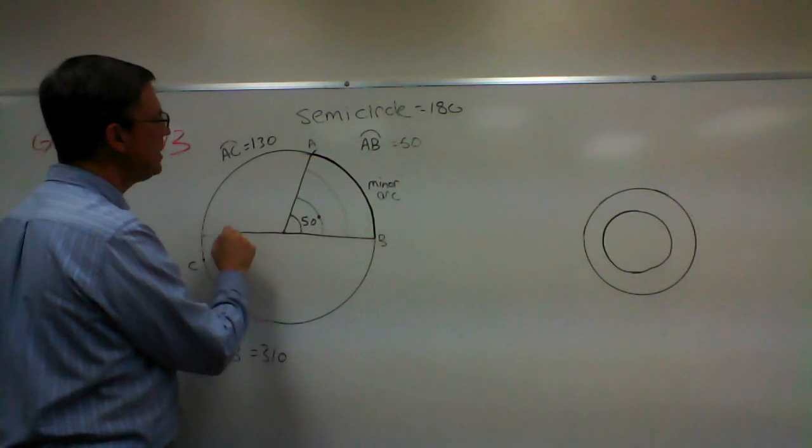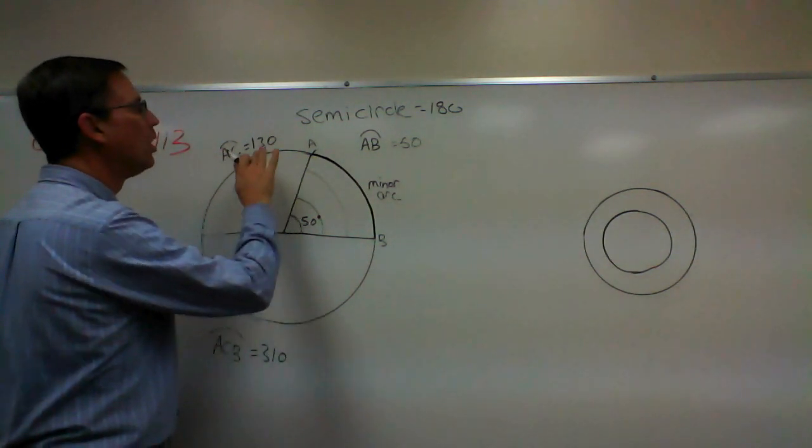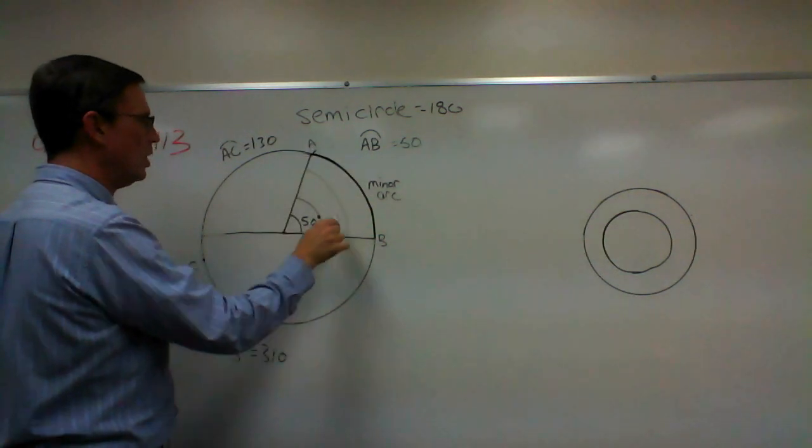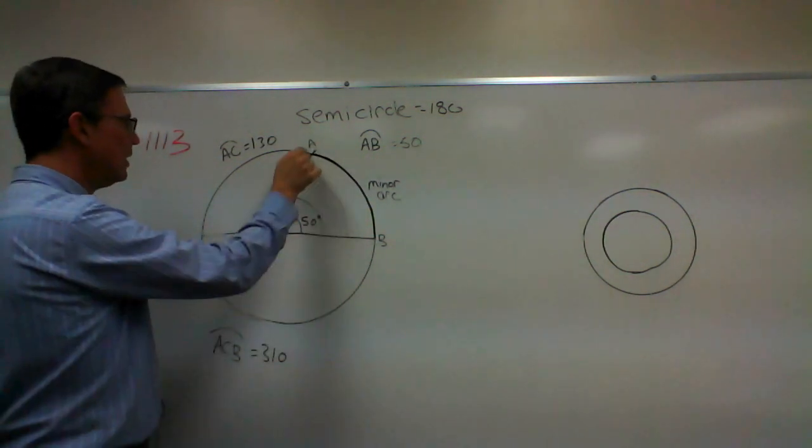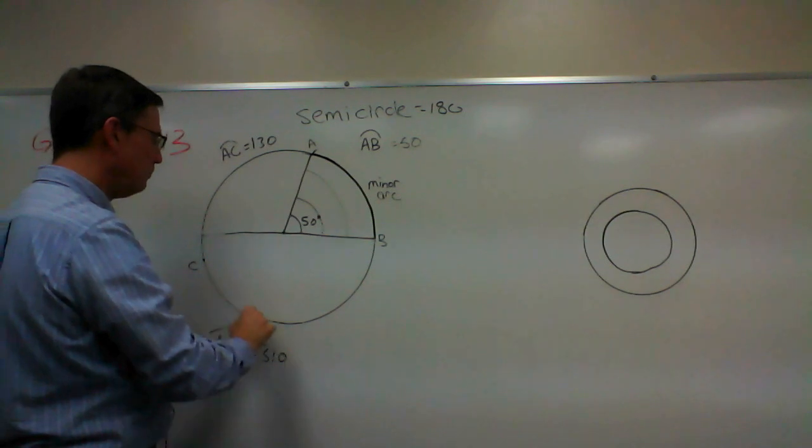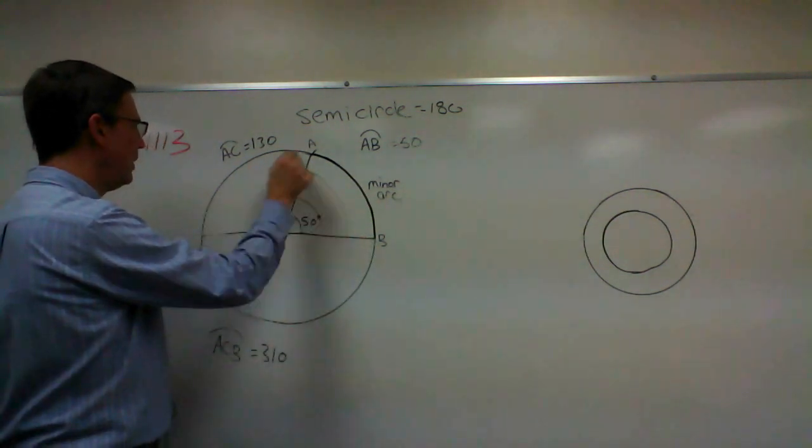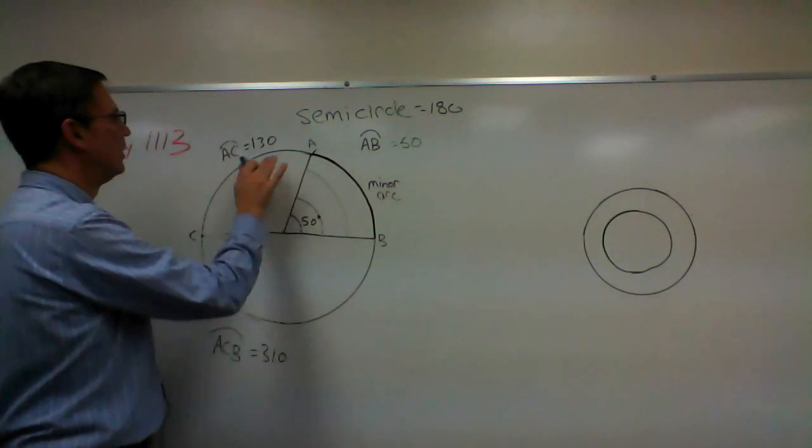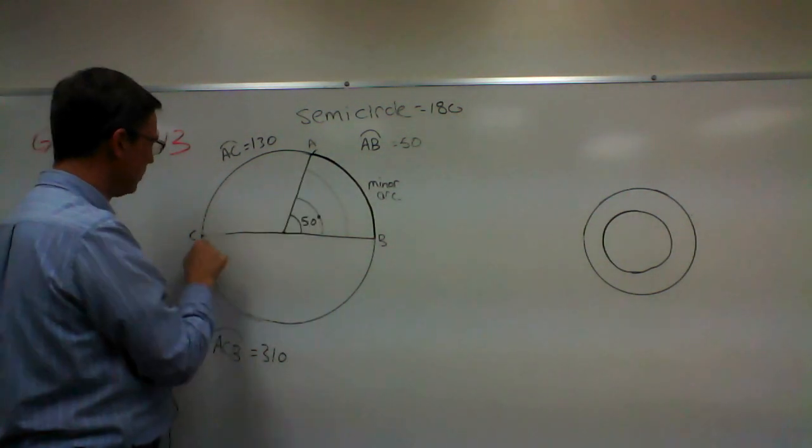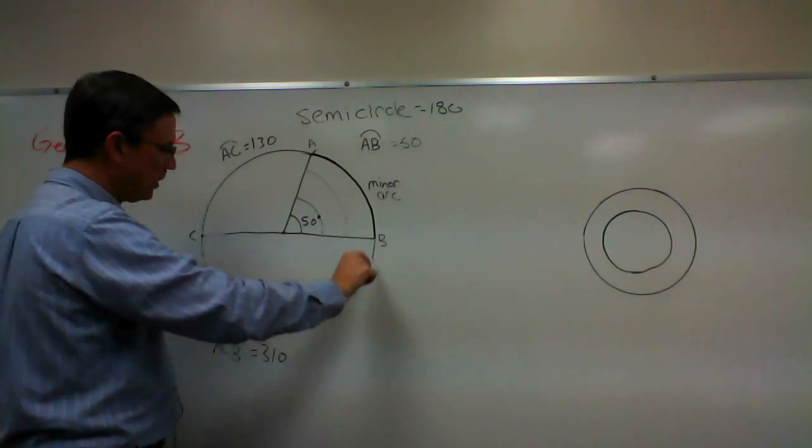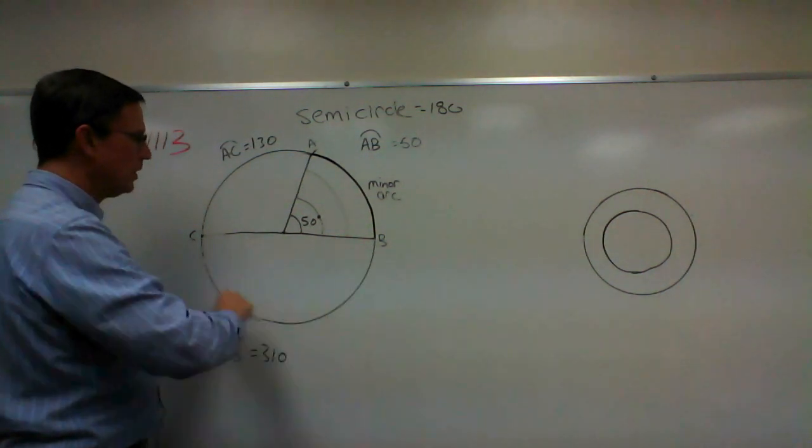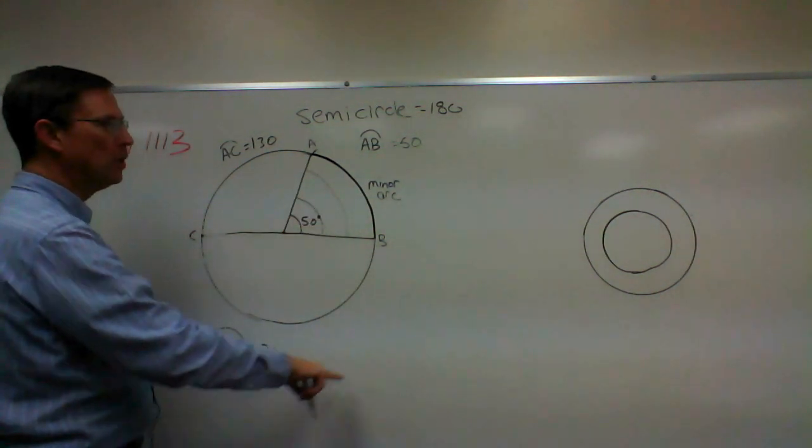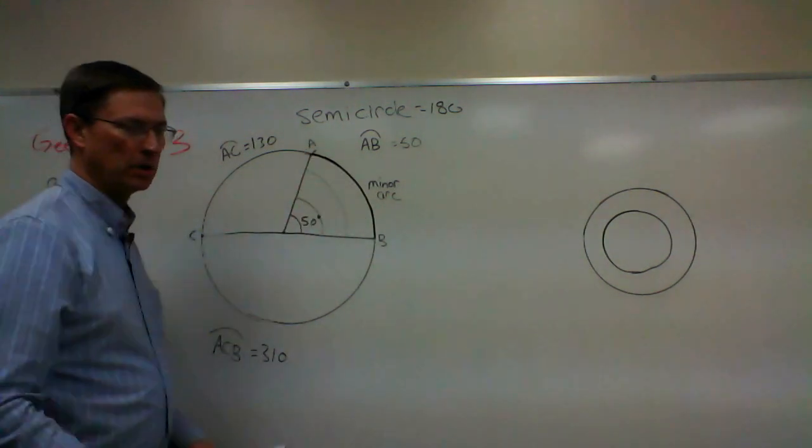Now a major arc is larger than a semicircle, so ACB going all the way around here—I should have already called this point C up here—calling this AC would be 130. Putting all this together, 310 is a major arc, this is a minor arc.